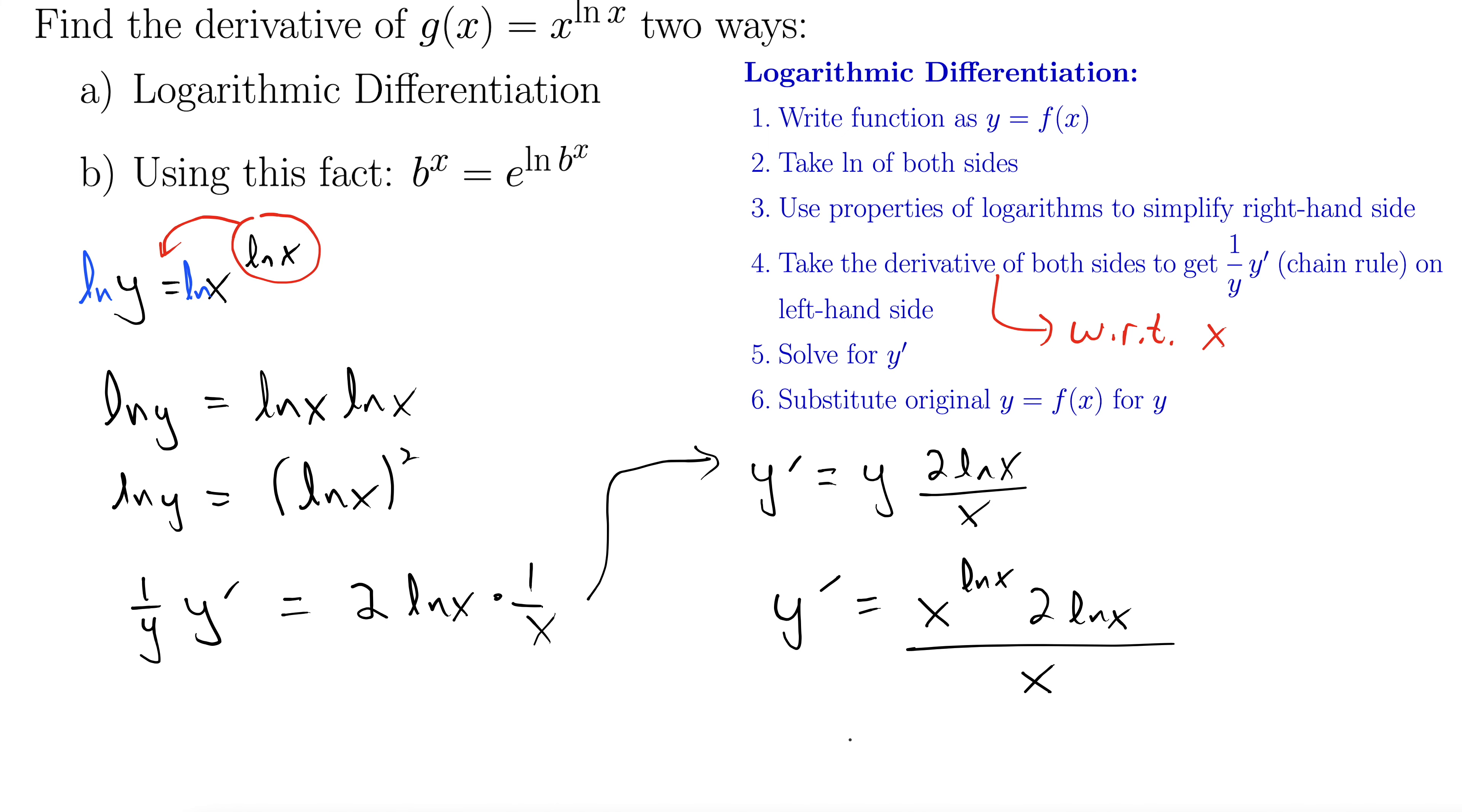Finally with a little bit of simplification, we can write this as, let's do a 2 out in front, x to the natural log of x minus 1, all times natural log x.